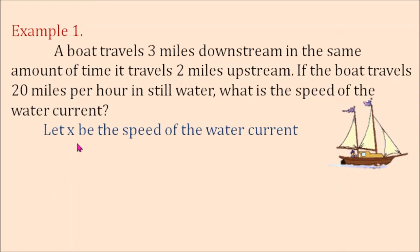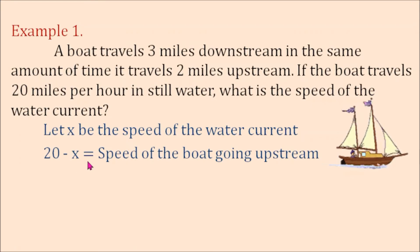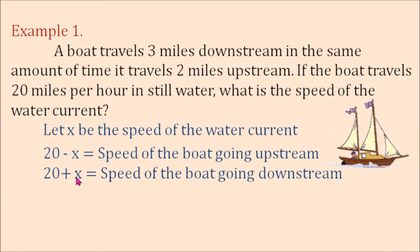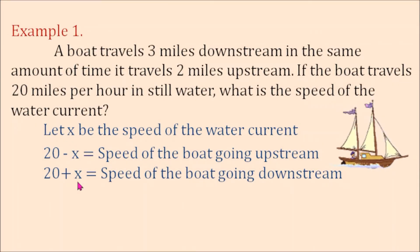First, let x be the speed of the water current. 20 minus x is the speed of the boat going upstream. Why is it minus x? It's because the boat is traveling against the direction of the current. 20 plus x is the speed of the boat going downstream, because the boat is traveling with the current — the current makes the boat travel even faster.